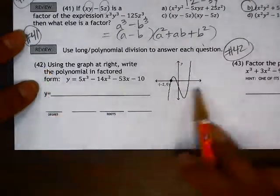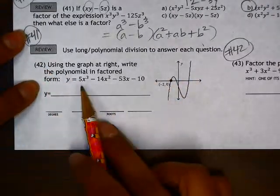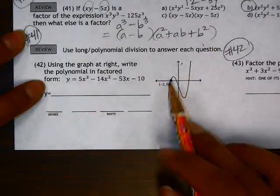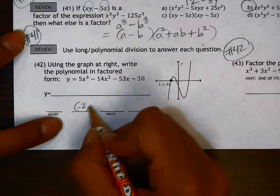Okay, in 42, we're going to use this graph to write the polynomial in factored form. This graph tells us that one of the roots is at negative 2, 0.